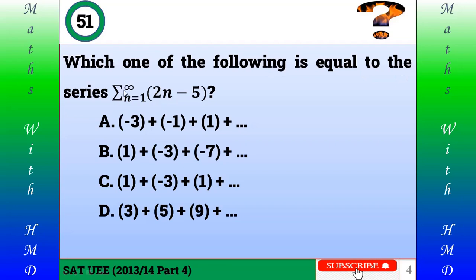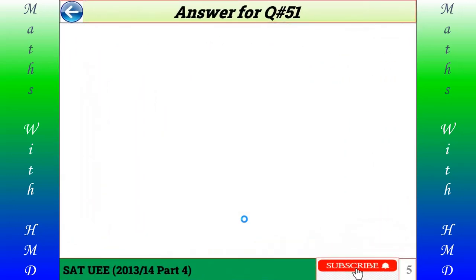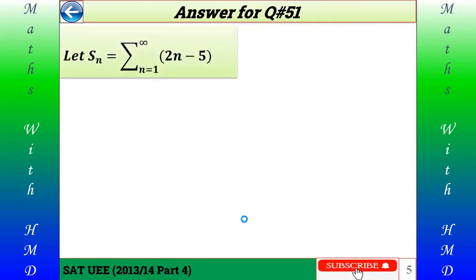Here is question number 51: which one of the following is equal to the series which is the sum from n equals 1 to infinity of (2n minus 5)? A) minus 3 plus minus 1 plus 1, B) 1 plus minus 3 plus minus 7, C) 1 plus minus 3 plus 1 plus something, D) 3 plus 5 plus 9 plus something. Please try by yourself first.